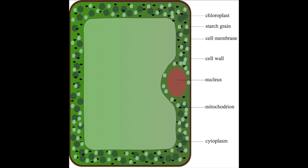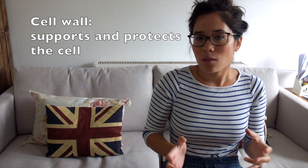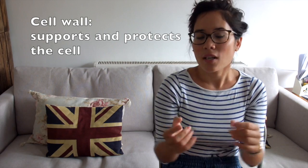Moving on to the plant cell, you find exactly the same structures in the plant cell — nothing's missing, you've just got a few additions. First of all, make sure you're happy that a plant cell is very rectangular in shape, and that's because surrounding it is the cell wall, which supports the cell.